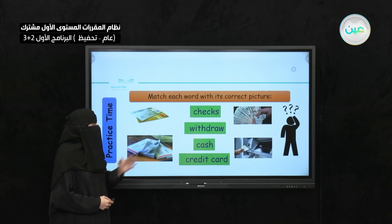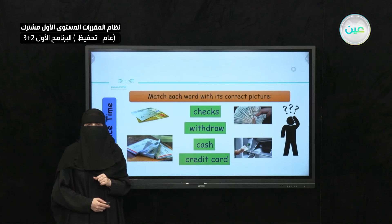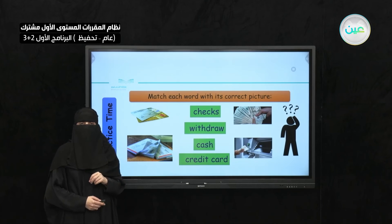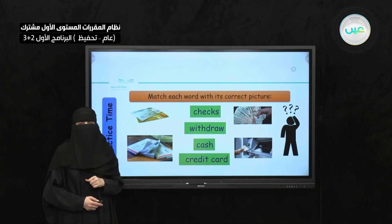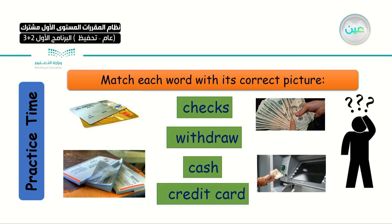Now, short practice — try to match each picture with the correct word. You have: checks, withdraw, cash, credit card. Look at the four pictures. Which one shows checks? Which picture shows a person withdrawing money? This is cash. And the credit card is the last one.